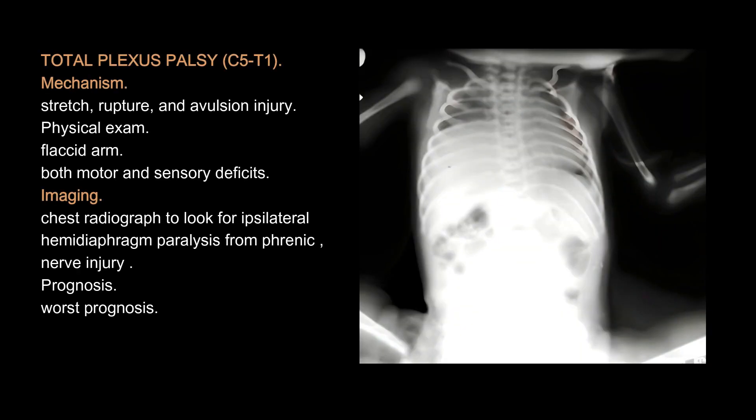Total plexus palsy (C5-T1) results from stretch, rupture, and avulsion injury. Physical exam reveals a flaccid arm with both motor and sensory deficits. Imaging includes a chest radiograph to look for ipsilateral hemidiaphragm paralysis from phrenic nerve injury. Total plexus palsy carries the worst prognosis.